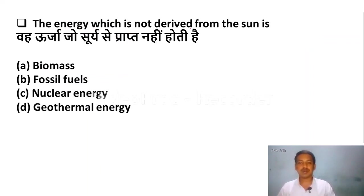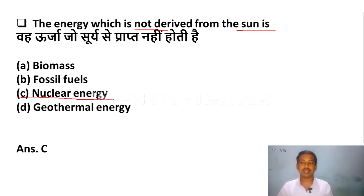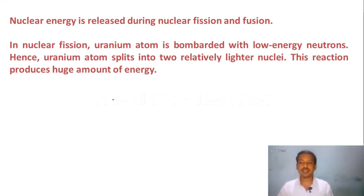The energy which is not derived from the sun is — Option A: biomass, Option B: fossil fuels, Option C: nuclear energy, Option D: geothermal energy. The correct answer is Option C, nuclear energy. Nuclear energy is not derived from the sun — it is released during nuclear fission and fusion.